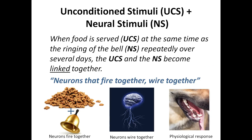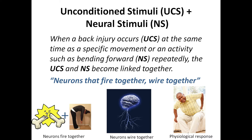When food is served, which is a UCS, at the same time as the ringing of the bell, which is a neutral stimuli, repeatedly over several days, the UCS and the NS become linked together. Neurons that fire together, wire together. When a back injury occurs, a UCS, at the same time as a specific movement or activity such as bending forward, an NS, repeatedly, the UCS and the NS become linked together — neurons that fire together, wire together — eventually producing a physiological response of pain with movement.